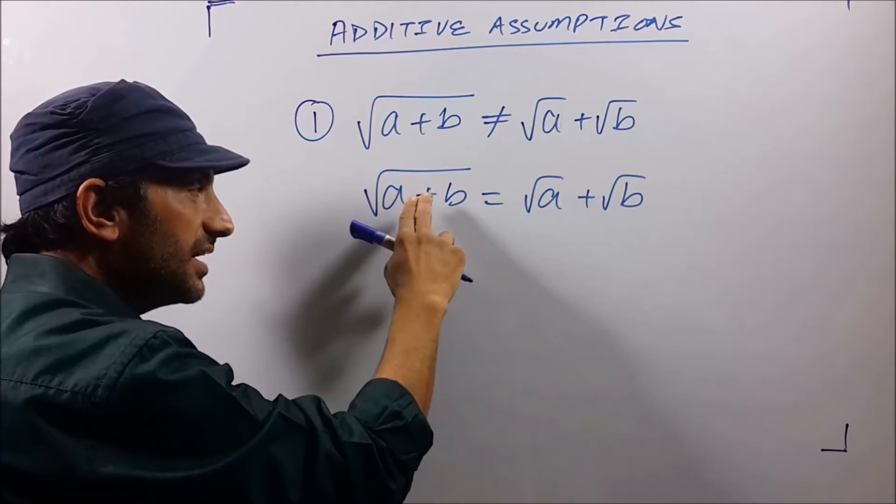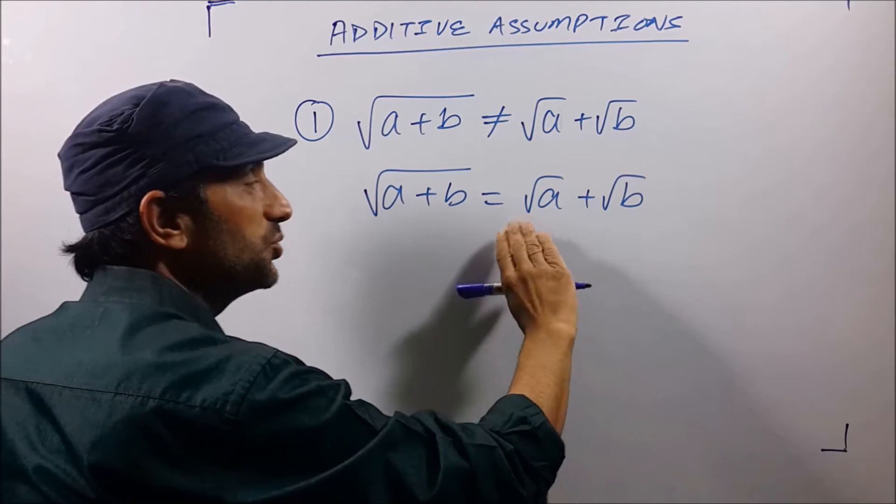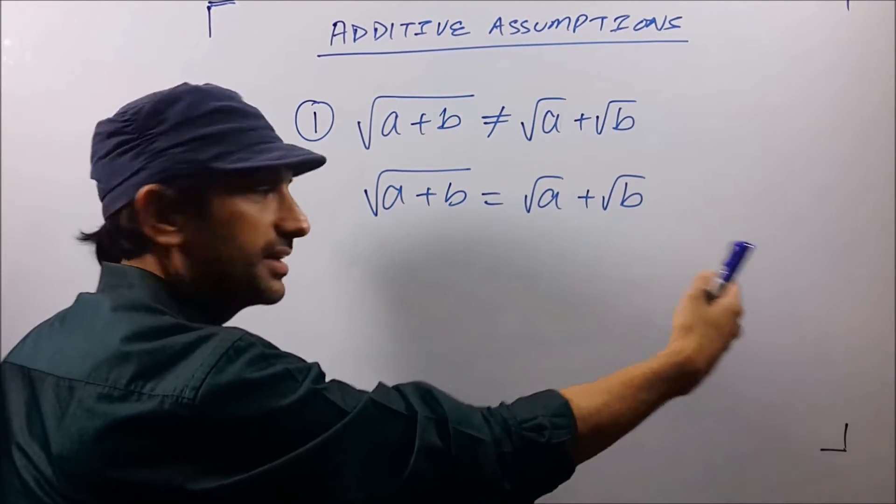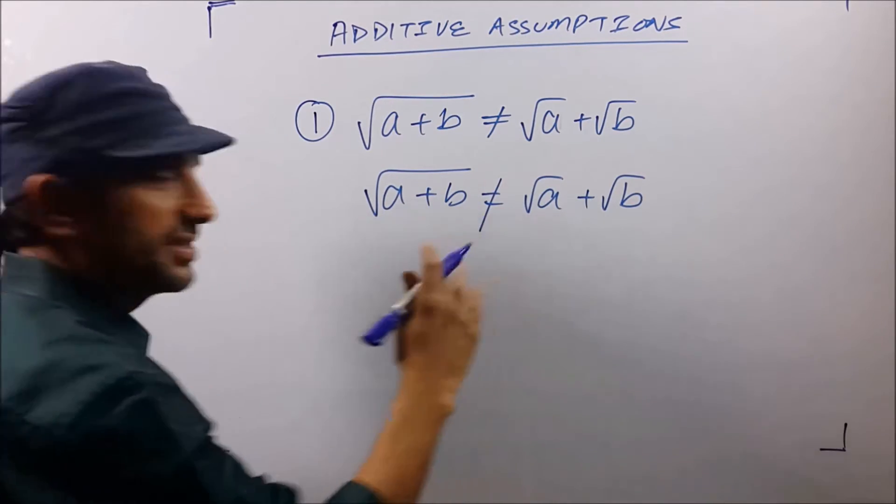Remember, whatever is inside the square root, that is one single term and these are two different terms on the right hand side. So left hand side is not equal to right hand side.